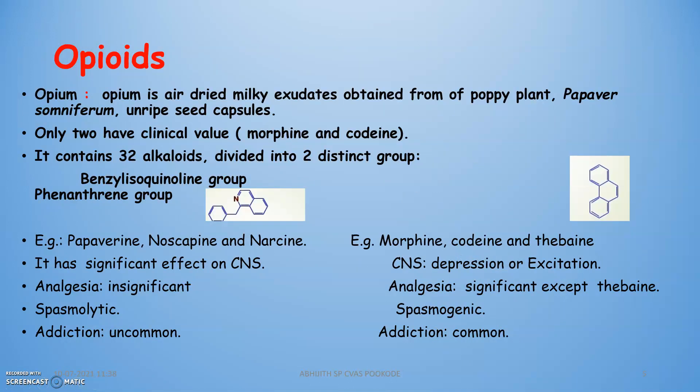Opium is the air-dried milky exudate obtained from the poppy plant, Papaver somniferum, from ripe seed capsules. Only two drugs have significant clinical value: morphine and codeine. Opium contains 32 alkaloids divided into two distinct groups: the benzylisoquinoline group and the phenanthrene group.